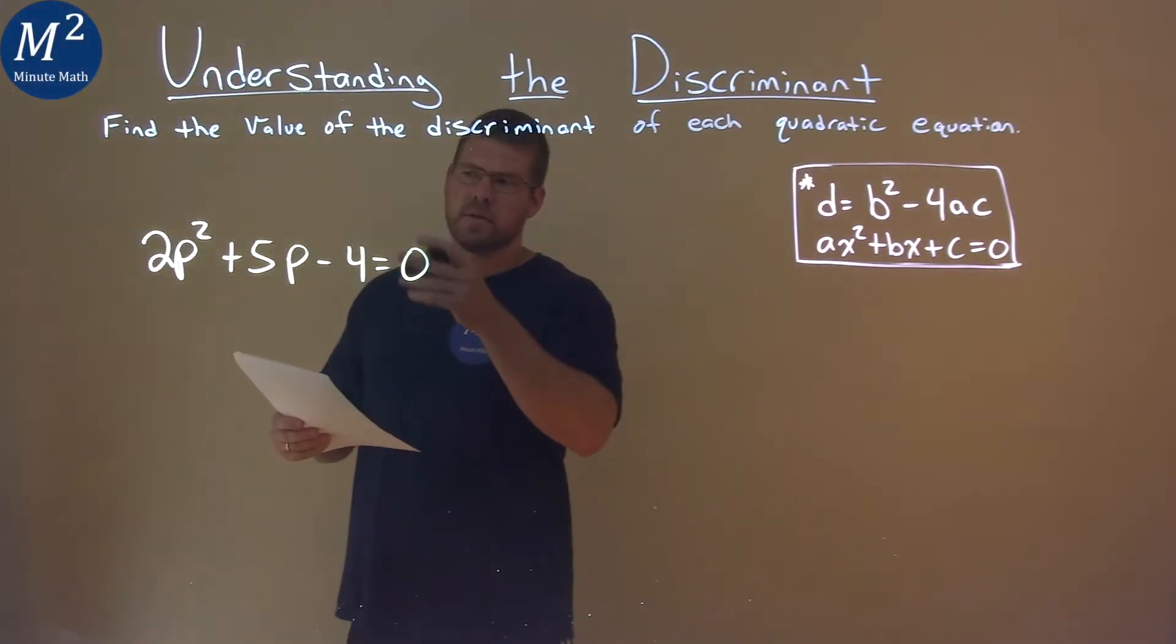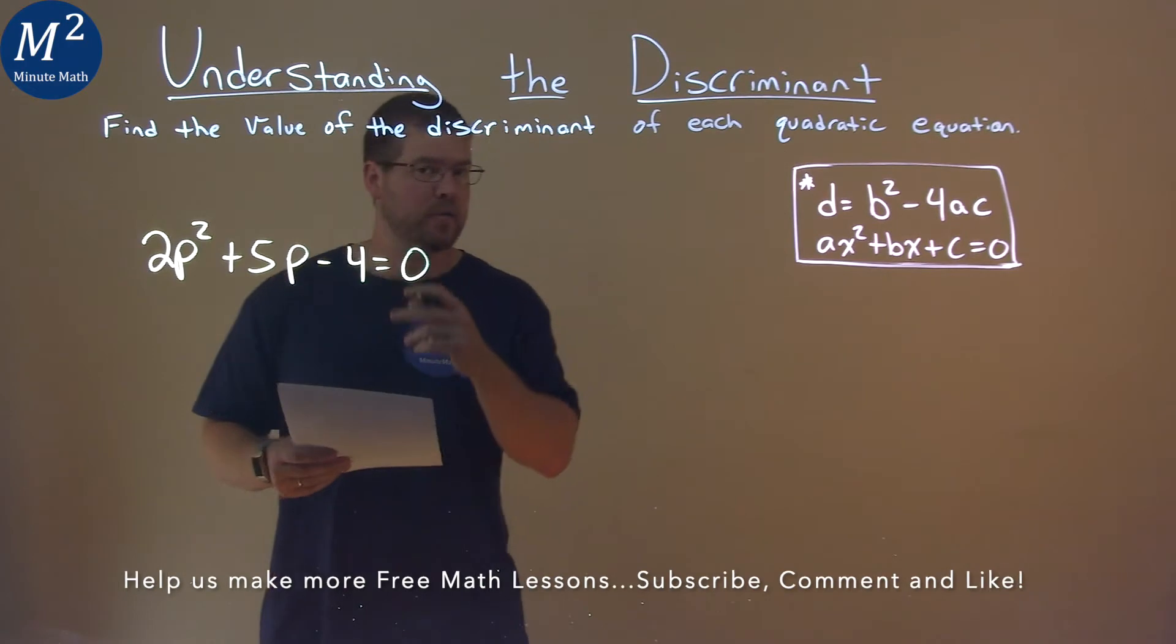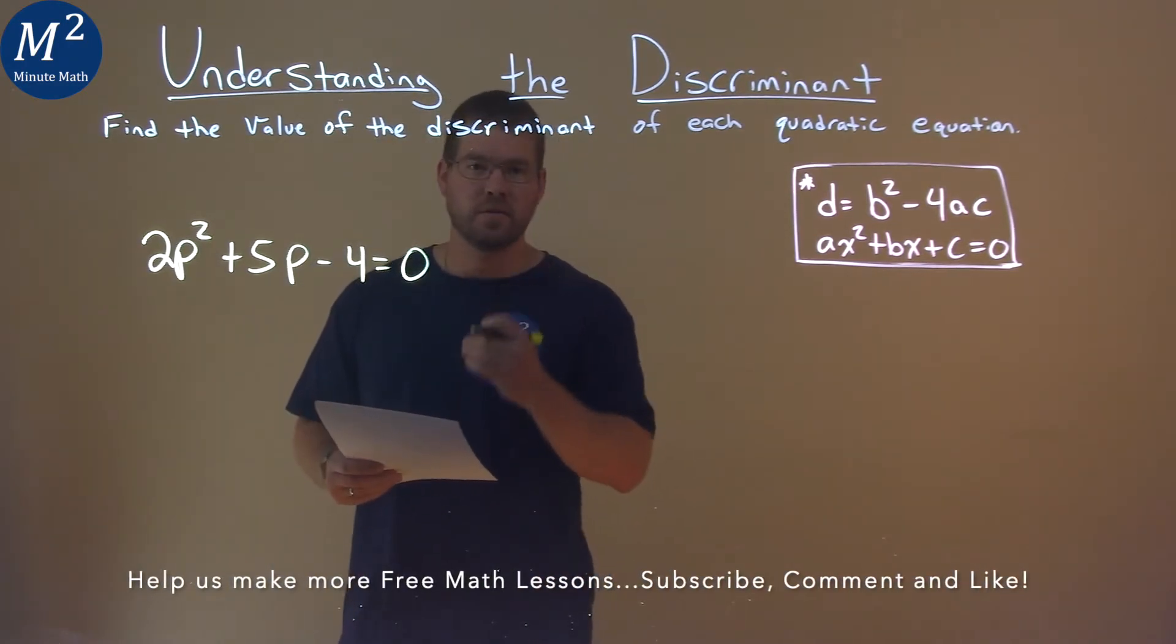We're given this problem right here, 2p squared plus 5p minus 4 equals 0, and we need to find the discriminant.